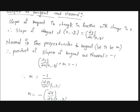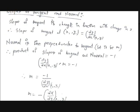We know that the slope of a tangent is the change in the function with respect to the change in x at a very small point. The definition of the derivative is also the same — the change in the function with respect to the change in x. So the slope of the tangent at a point (x1, y1) is nothing but dy/dx at the point (x1, y1).